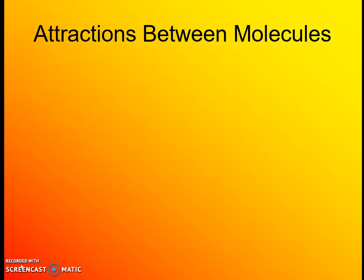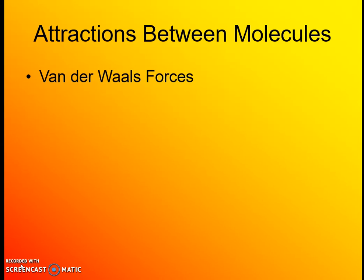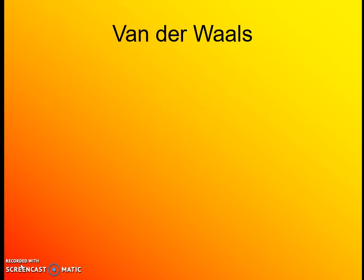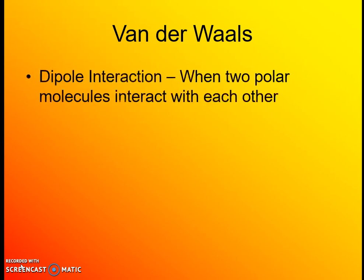Those polar molecules also attract each other because of their different charges. There are two types of van der Waals forces: dipole interactions and dispersion forces. Dipole interactions occur when a polar molecule has a positive and negative side, so opposite charges attract each other — like magnets, not as strong as ionic compounds, but still attracting each other.